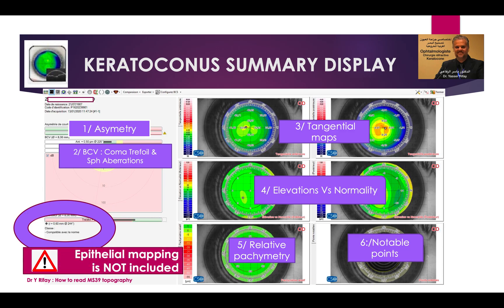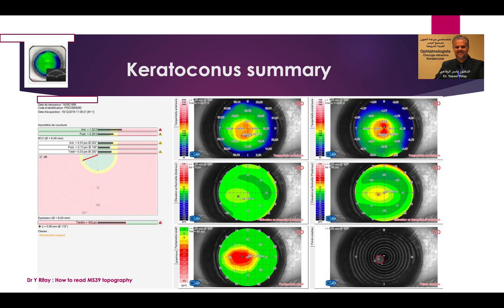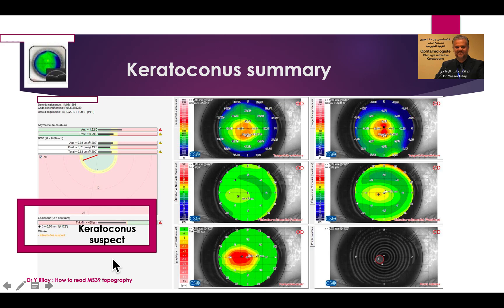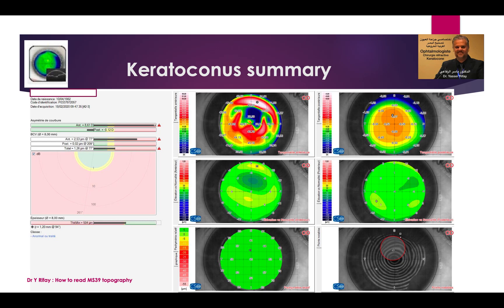This summary does not include epithelial mapping study. It only studies tangential maps anterior and posterior, elevations compared to normal corneas, relative pachymetry, coma and spherical aberrations, and places the notable points in one map to see if they are in the same area. The result can be normal, keratoconus suspect, keratoconus compatible, or abnormal when points are not in the same area.